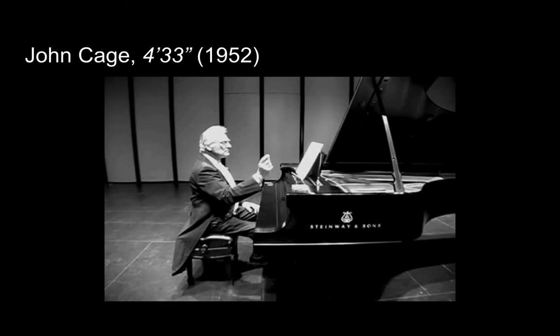Cage influenced many artists, in part through his teaching — first at the Black Mountain College in North Carolina, and then at the New School in New York City. Cage created 4 Minutes 33 Seconds while he was at Black Mountain College. A single musician enters the stage, prepares the instrument — initially a piano, but other instruments have been used — and then sits in absolute silence for the full duration of the piece. That's right, 4 minutes and 33 seconds. The sounds of the surroundings and audience members become the music itself. The piece was first performed in an outdoor amphitheater in Woodstock, New York, as part of a recital of contemporary piano compositions.